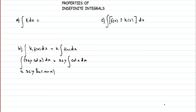If you want proof, we can verify: take the derivative of ln(sin(x)) and check whether it gives us cot(x). We know from differentiation rules that the derivative of ln(u) is the derivative of u divided by u.